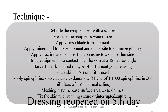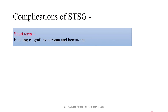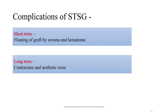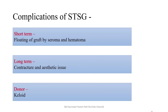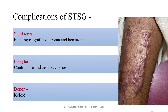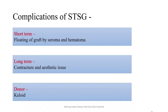Coming to the complications of STSG: short-term complications include floating of the graft due to seroma or hematoma, which is why meshing is recommended even when surface area expansion is not needed. If seroma or hematoma appear, there is a high chance of infection. Long-term complications include contracture and aesthetic issues. At the donor area, the most common complication is keloid formation.